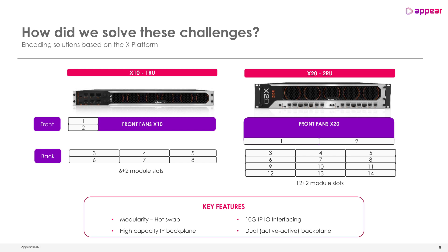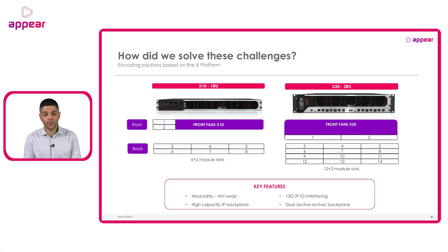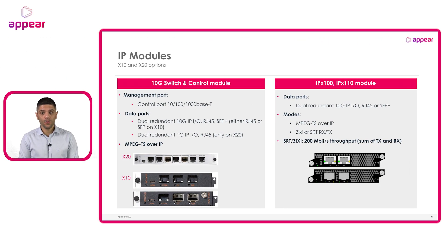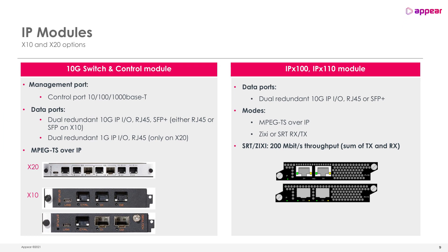This solution also offers a dual active-active backplane, providing implicit hardware redundancy. In order to provide IP connectivity, we have the mandatory switch and control modules in the front. Here in the picture we can see the options for X10 and X20. This module, besides switch, backplane, and control management, provides dual 10 Gigabit full duplex IP input/output connectivity to send and/or receive content through the unit.